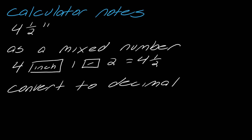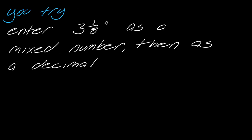If you wanted to convert this to a decimal for whatever reason, really the four you don't have to worry about. It's just this second part that you'd have to convert into a decimal. So I would just take one divided by two. That gives me 0.5. And then I would replace the fraction of the half with that decimal. So it would become 4.5. So what I want you to do is enter three and one eighth as a mixed number in your calculator and then find its decimal equivalent. So go ahead and pause the video and then hit play when you think you've done it.